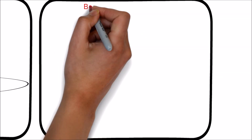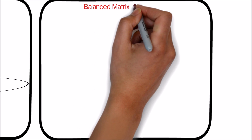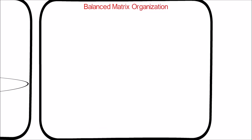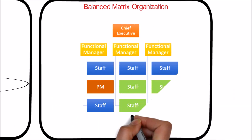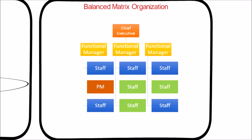While the balanced matrix organization recognizes the need for a project manager, it does not provide the project manager with full authority over the project and project funding. Project coordinators have power to make some decisions, have some authority, and report to a higher level manager.